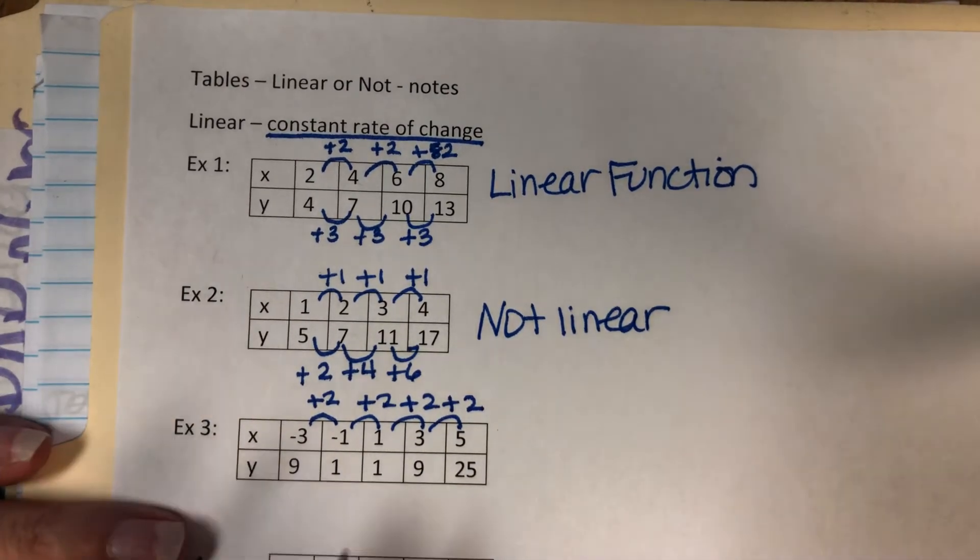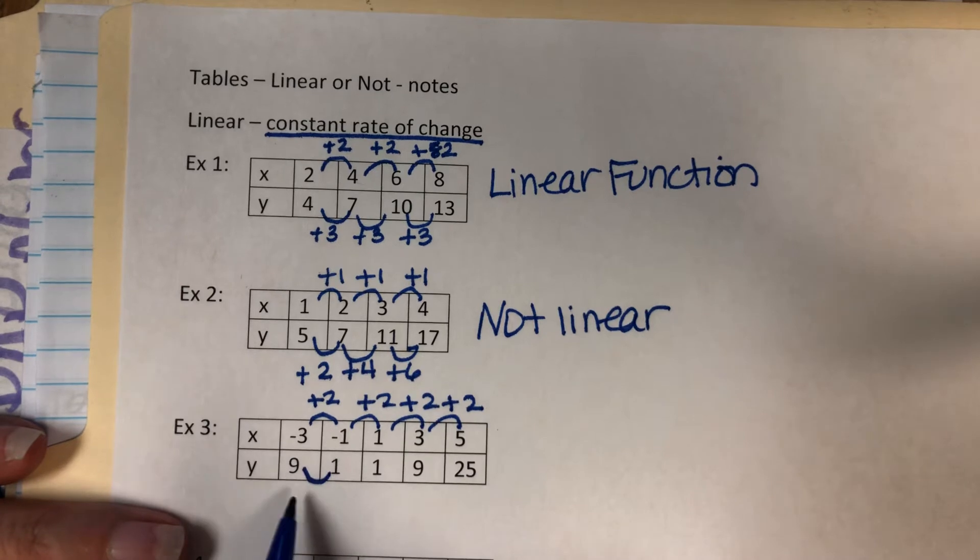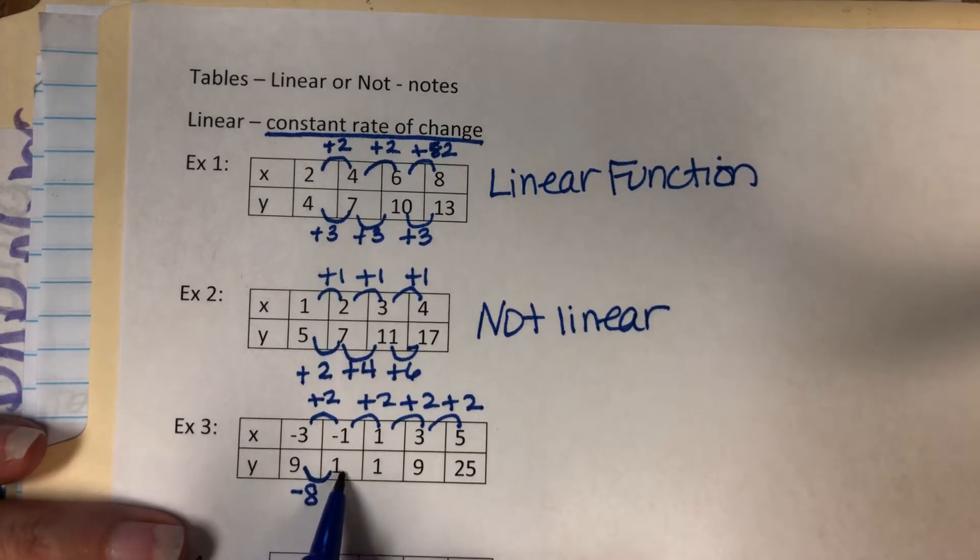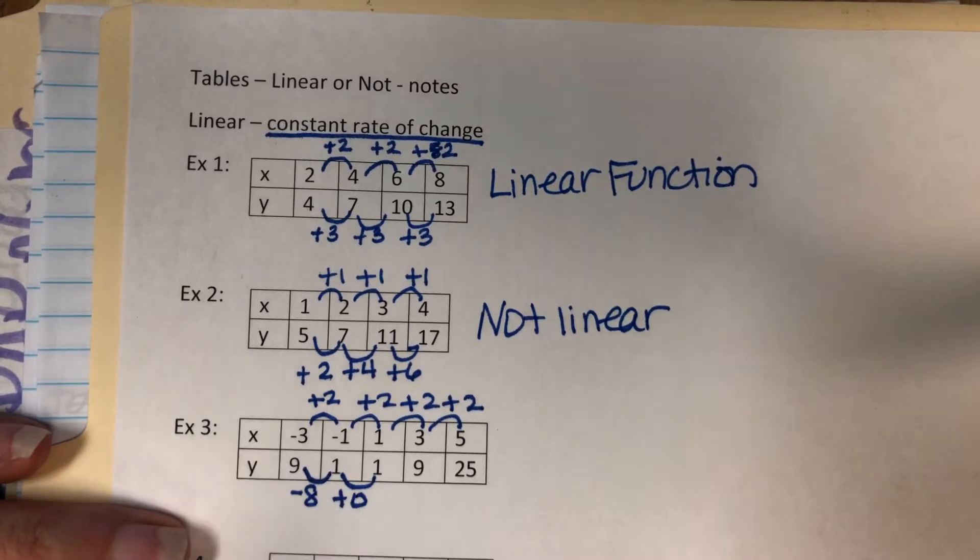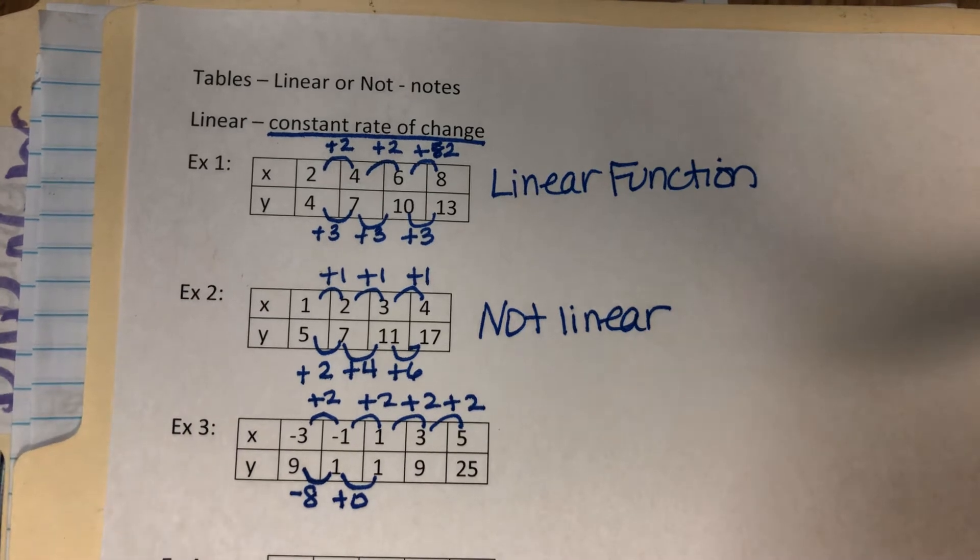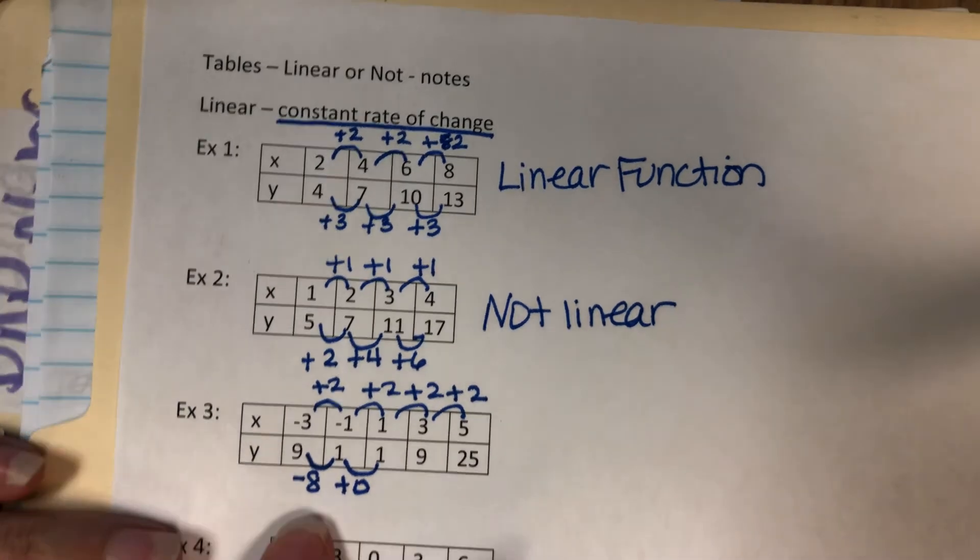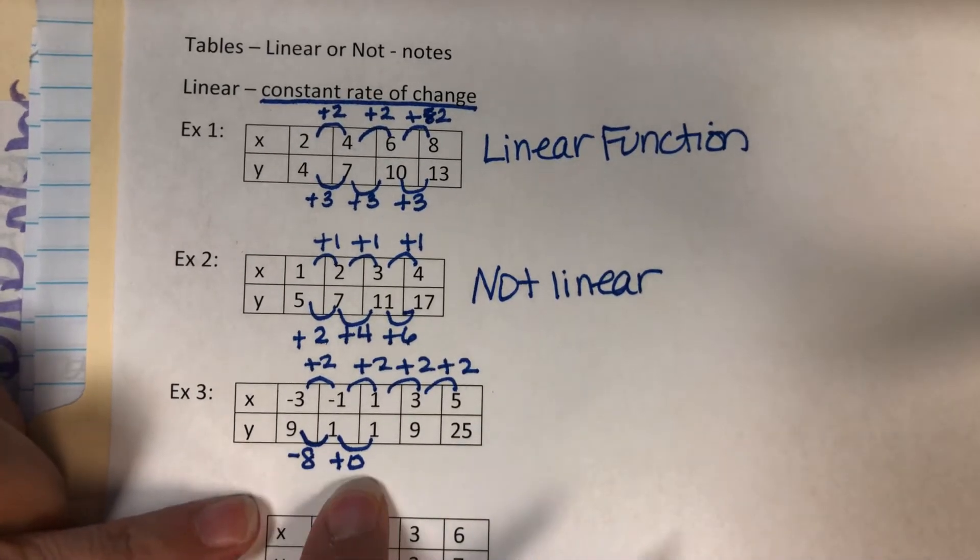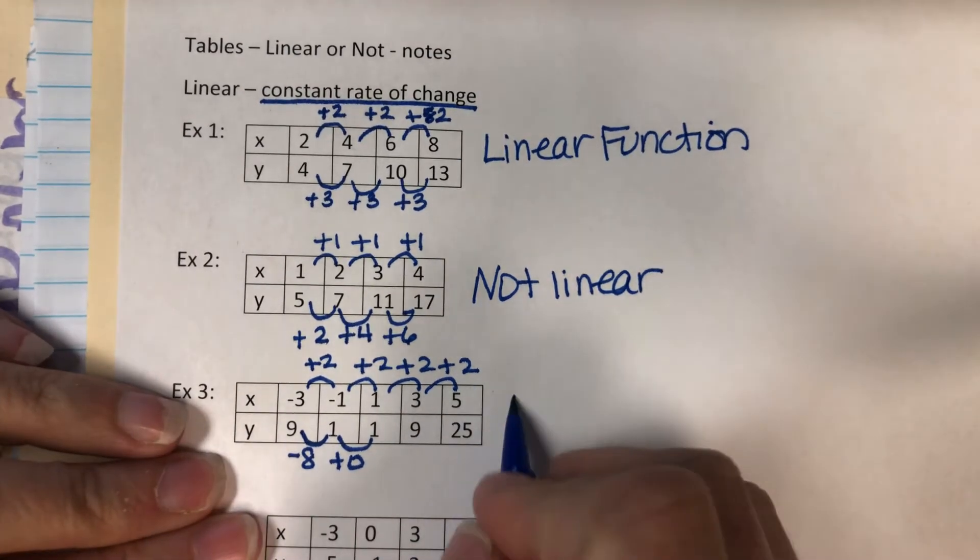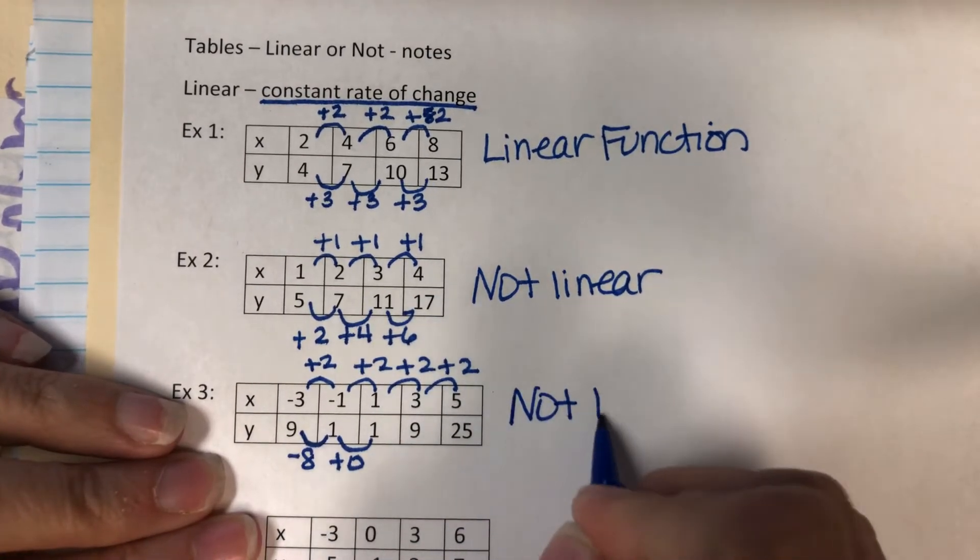Let's look at our y's. How do I get from 9 to 1? I subtract 8. 1 to 1 is 0. I don't even need to keep going because they're not constant. I can't subtract 8 here and then nothing here. So it is not linear.